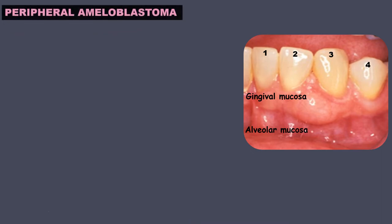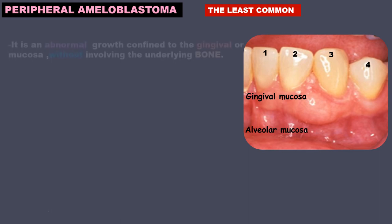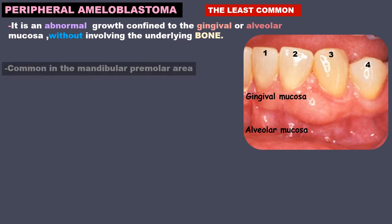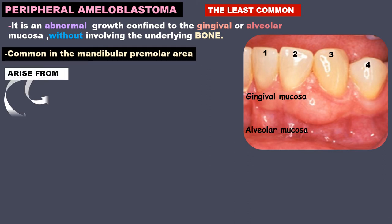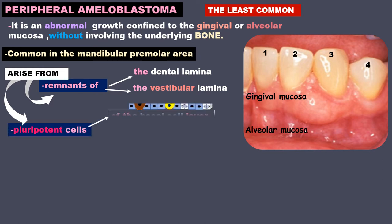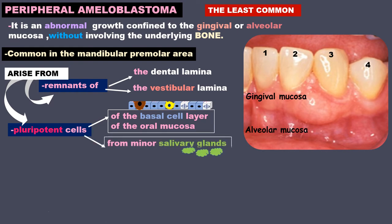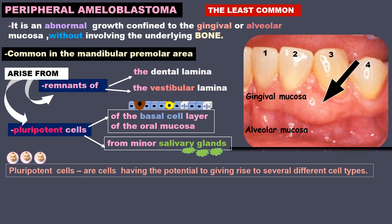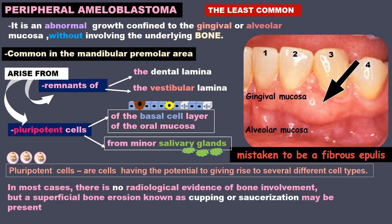The peripheral ameloblastoma is the least common type. It is an abnormal growth confined to the gingival or alveolar mucosa without involving the underlying bone. It is common in the mandibular premolar area and can arise from remnants of the dental lamina, the vestibular lamina, or from pluripotent cells of the basal cell layer of the oral mucosa, or from minor salivary glands. In most cases there is no radiological evidence of bone involvement, but a superficial bone erosion known as cupping or saucerization may be present.